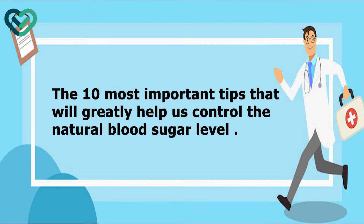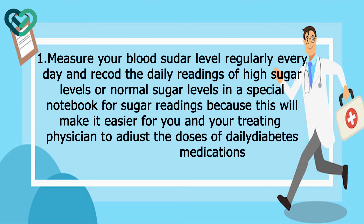The 10 most important tips that will greatly help us control blood sugar levels. First tip: Measure your blood sugar level regularly every day and record the daily readings — whether high or normal — in a special notebook. This will make it easier for you and your treating physician to adjust the doses of daily diabetes medications.